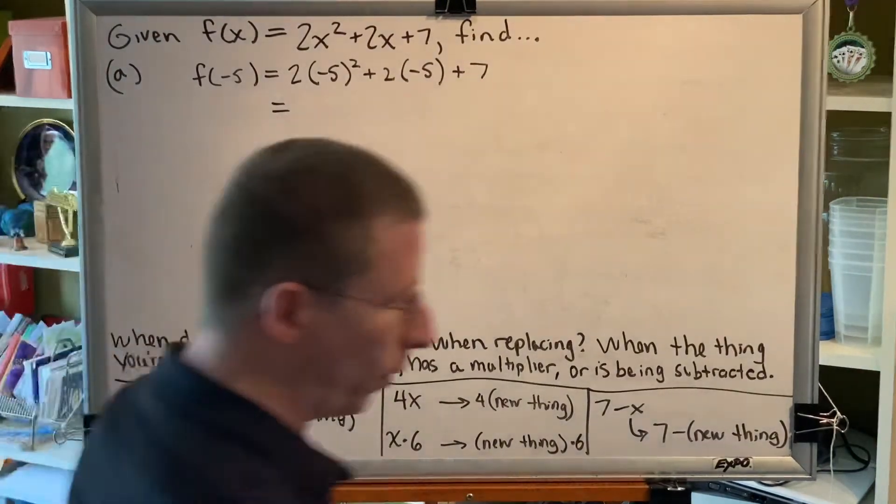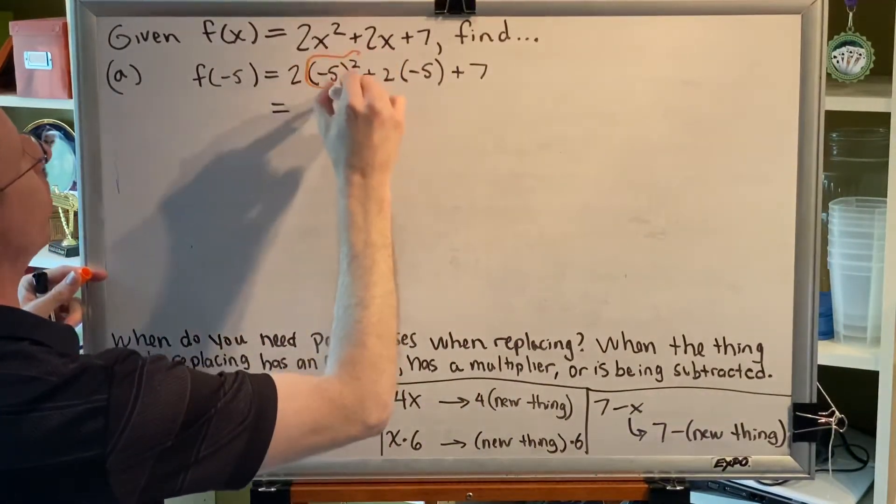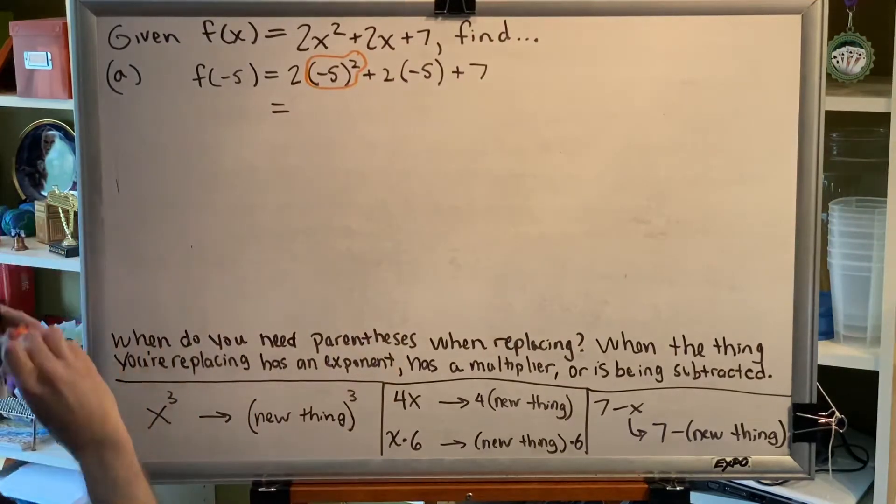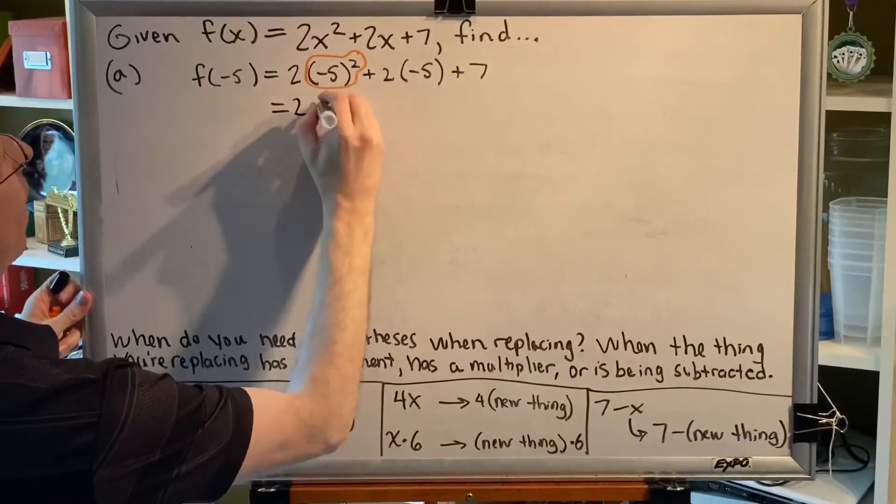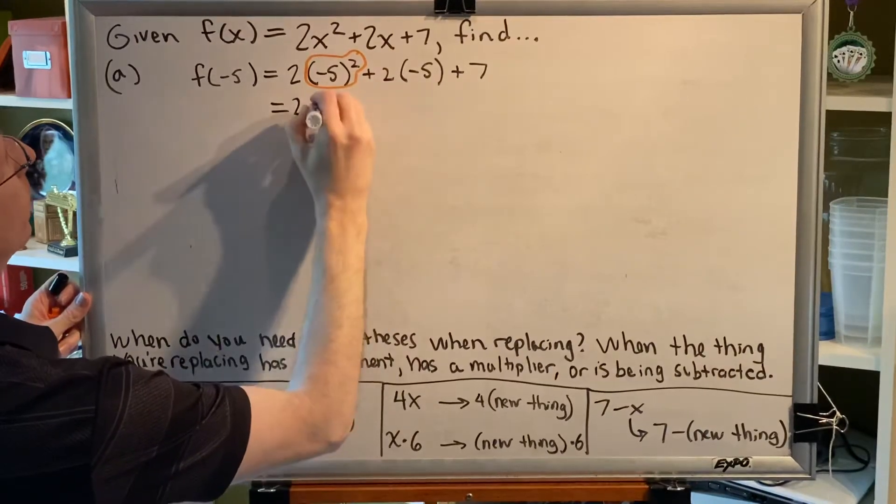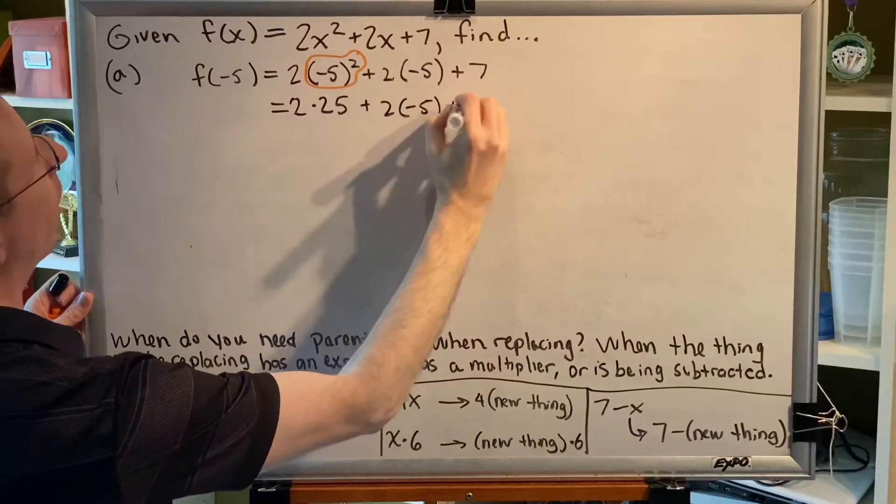Now, simplify by following order of operations. Order of operations says that exponents are the first thing we should do. So what is (-5)²? Negative 5 times negative 5 is positive 25. So we get 2 times 25, plus 2 times -5, plus 7.